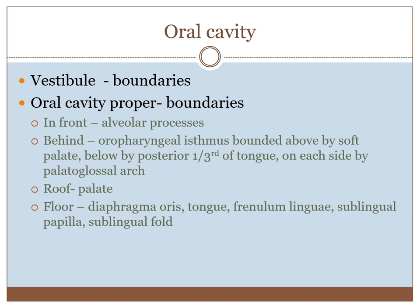The oral cavity proper is bounded anteriorly by the alveolar processes having the gums and the teeth, and the upper and lower jaw, and behind by the oropharyngeal isthmus. The boundaries of the oropharyngeal isthmus are: above it has the soft palate, below it has the tongue's posterior one-third, and on each side by the palatoglossal arch.